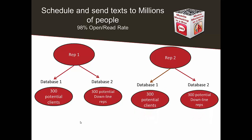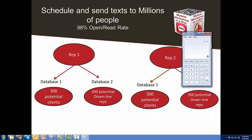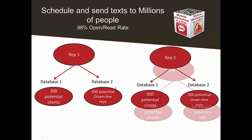Think about the multiplier of this. Say 10,000 reps only get four people in their database a week times 52 weeks — that's already 2 million people in your database who have said they're potentially interested in losing some weight, a product, or building a business and making extra money. That database would be the most valuable database ever in a year if this was embraced across your organization and became part of your culture.